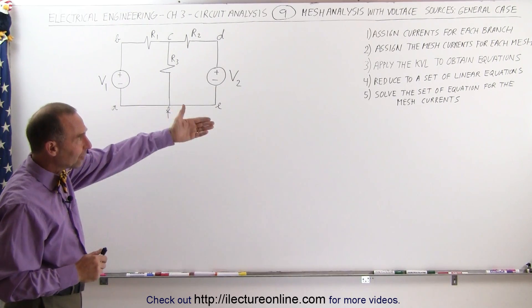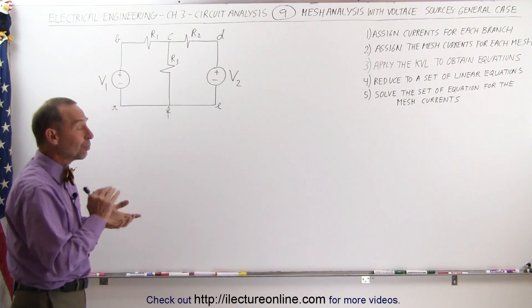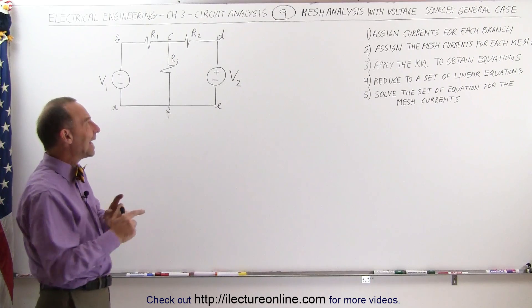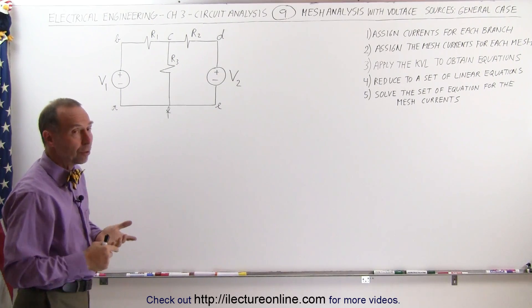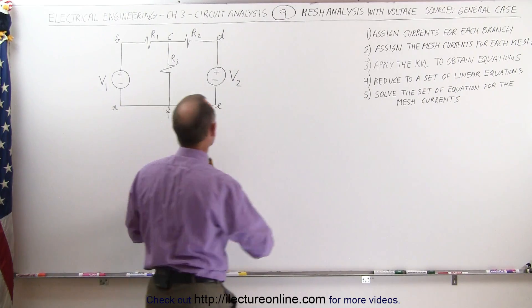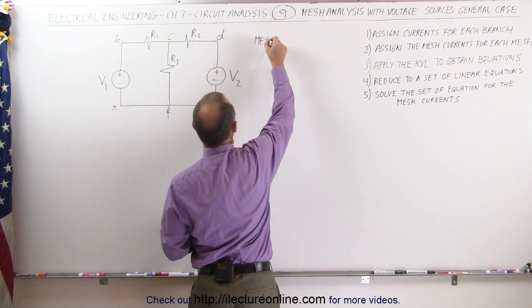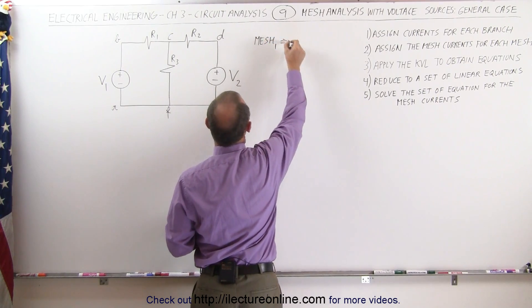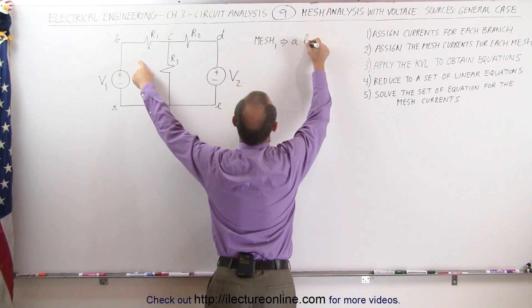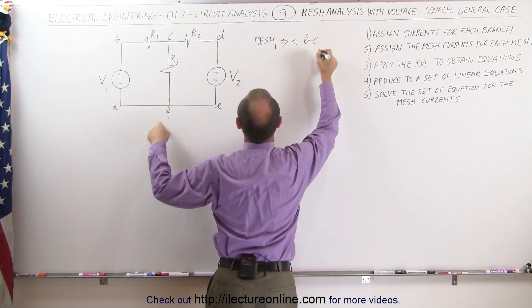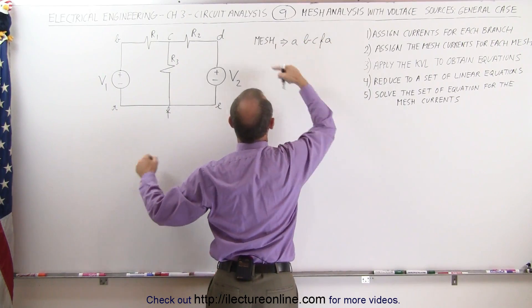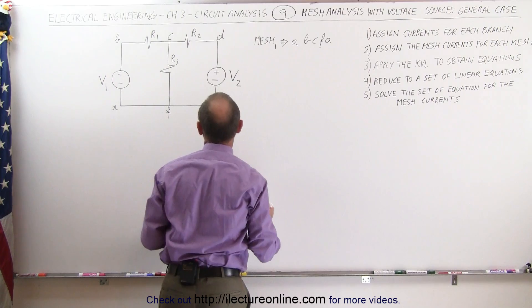We have a set of steps to follow, but before we do that let's redefine what a mesh is. A mesh is a loop that does not contain any other loop. In this relatively simple circuit, you can have a loop that's not a mesh. The first mesh — mesh 1 — can be defined by going around the circuit from A to B to C, to F, and back to A. That's a complete loop called a mesh because there's no other loop contained within it.